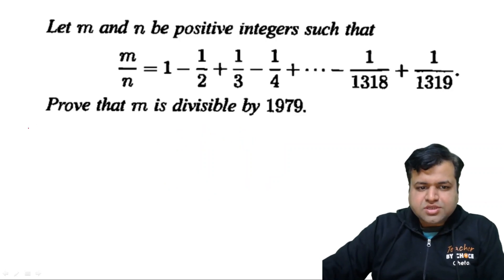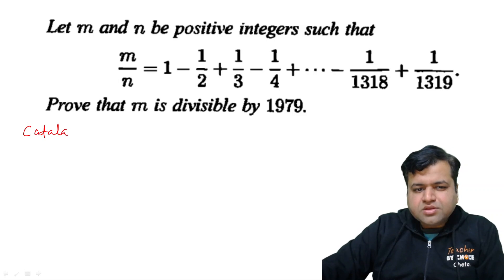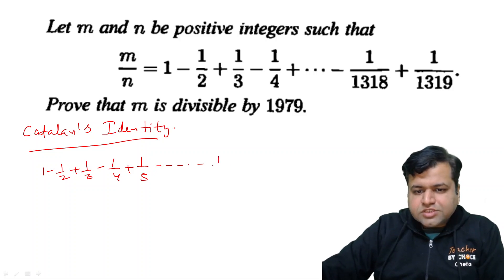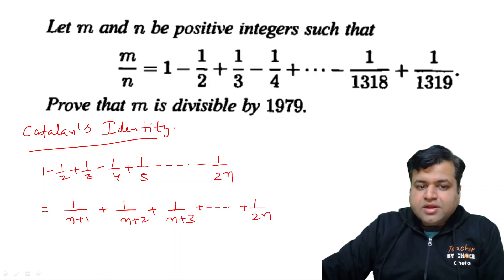So let's discuss the solution. So basically, there is a Catalan's identity. If you don't know the name, you will solve the question. Because generally, we will solve the question. So Catalan's identity, what is it? That is, if 1 minus half plus 1 by 3 minus 1 by 4 plus 1 by 5 and so on. We are going to do this till minus 1 upon 2n. Because even numbers can be negative sign. So let's say we are proceeding till minus 1 by 2n. Now this quantity, this is equals to 1 upon n plus 1 plus 1 upon n plus 2 plus 1 upon n plus 3 plus and so on till 1 upon 2n. This is Catalan's identity.